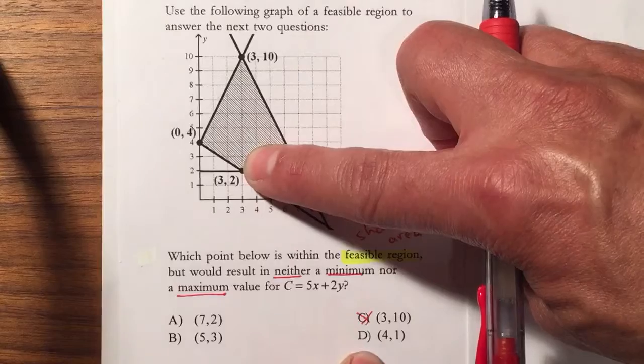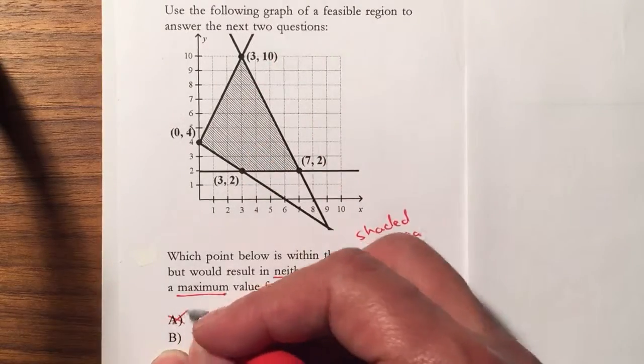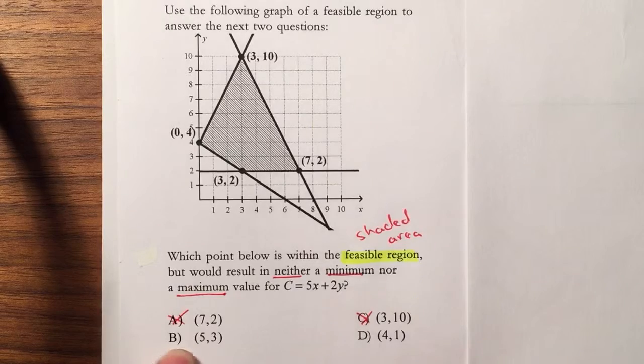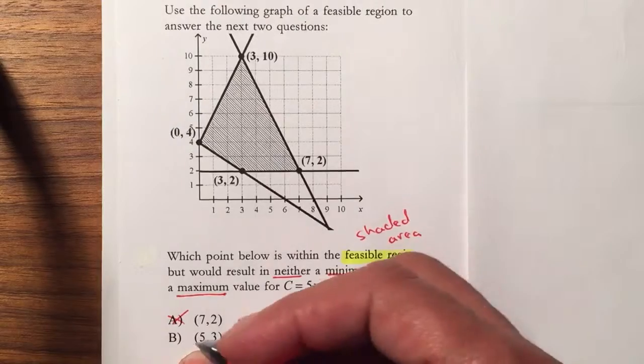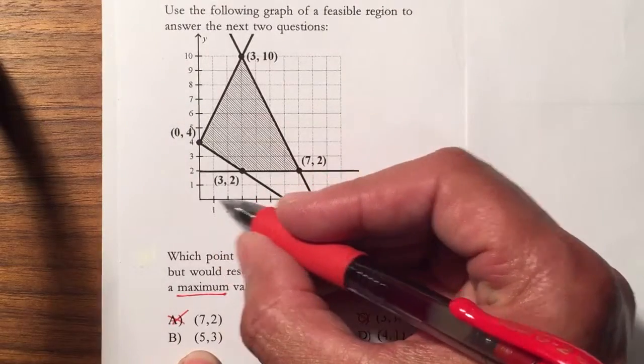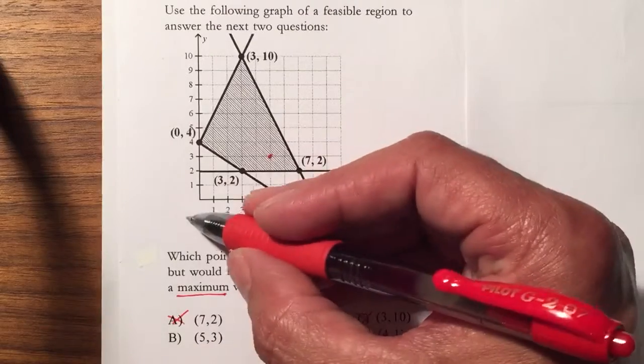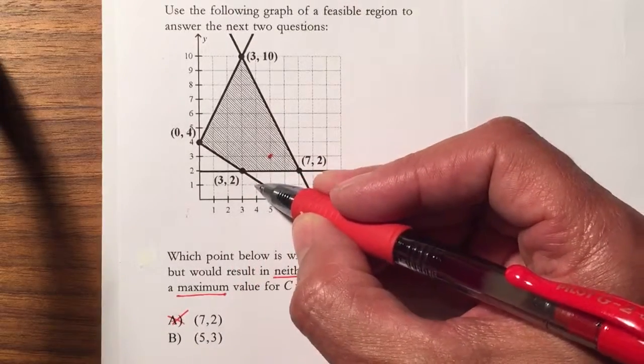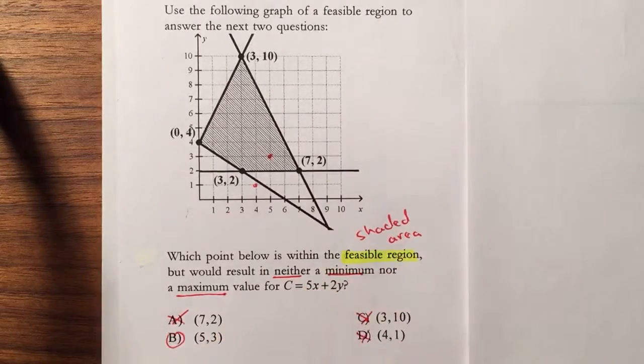(3,2) is not listed, and (7,2) we don't want either, but we do want it to be on the shaded area, on the feasible region. (5,3) - from (0,0), 5 over and up 3, so that one's fine. (4,1) - that one's not, so therefore your answer is letter B.